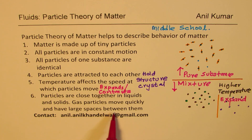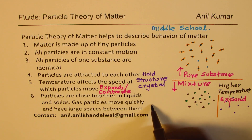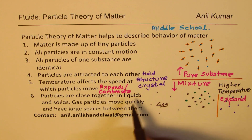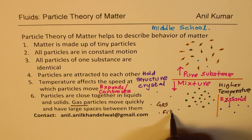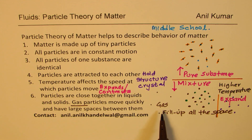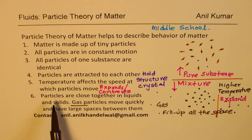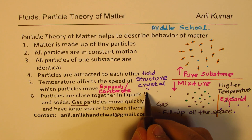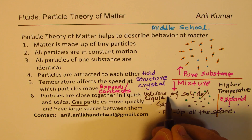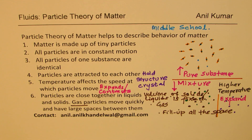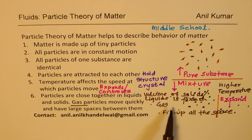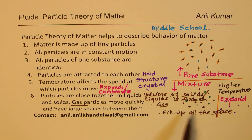If you're talking about gas particles, they move quickly and have large spaces between them — they fill up all available space. So gas will fill up all this space. If you put gas in a container, it will occupy the whole volume. However, the volume of solids and liquids is fixed. This explains two things: why volume of solids and liquids is fixed — since they are close and compact — and in gases it is not fixed, as they can fill up the whole space.